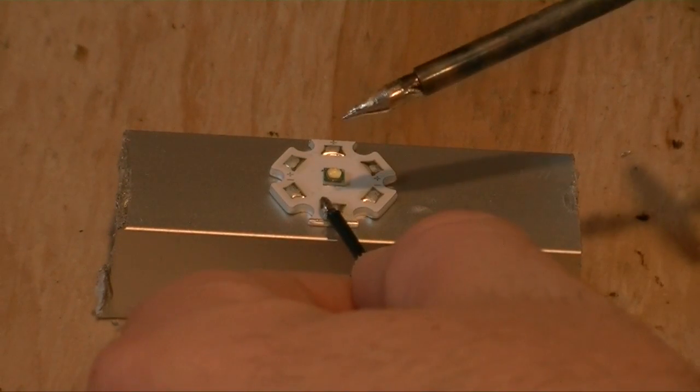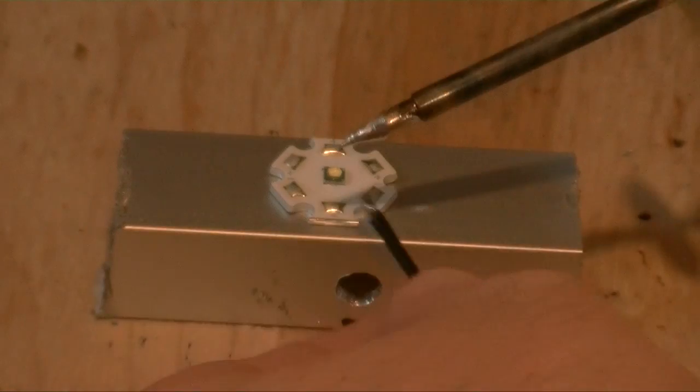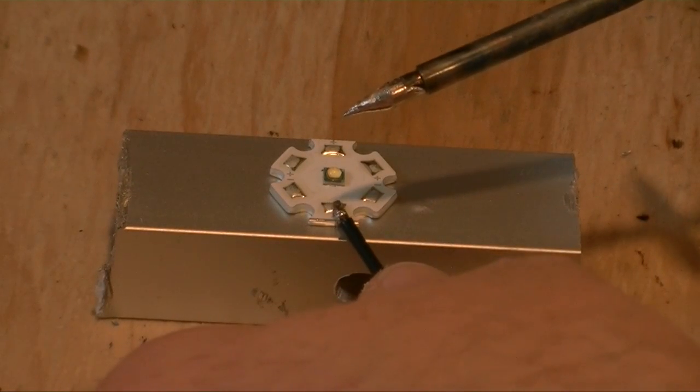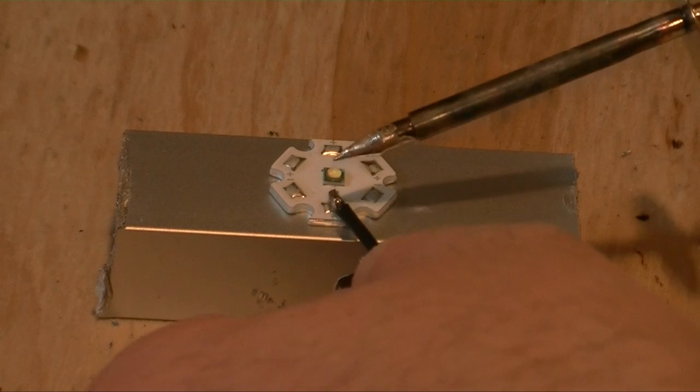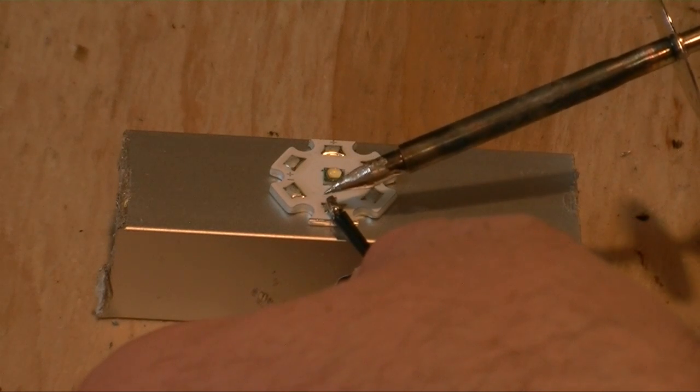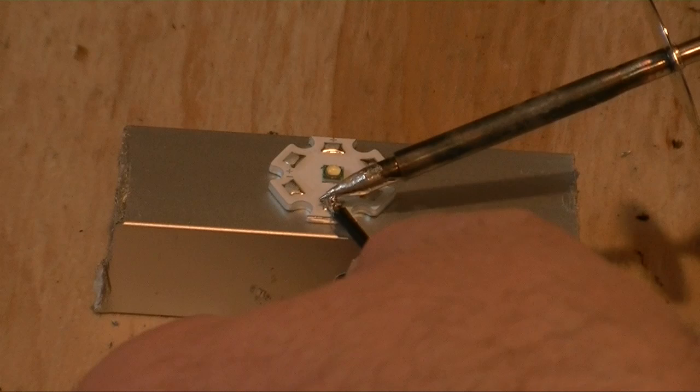So all I do - there's a couple ways to do this - but since I've pre-tinned the wire and the pads are pre-tinned from Rapid LED, which is really nice, all I really need to do is when the soldering iron's really hot, I just touch the wire.